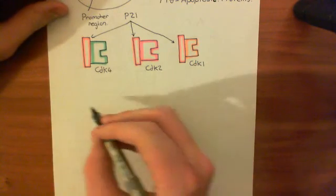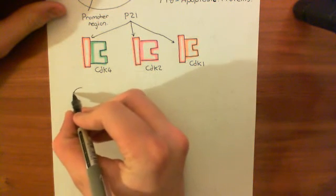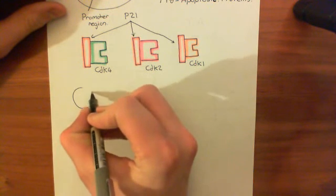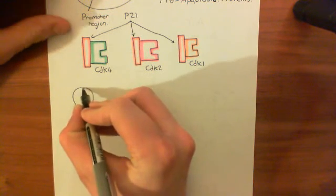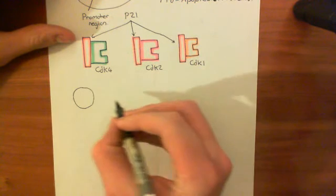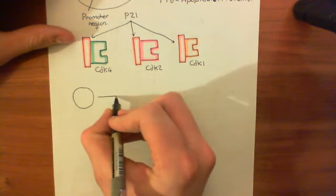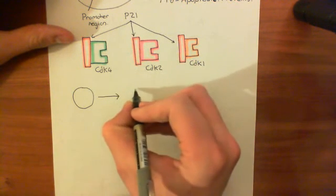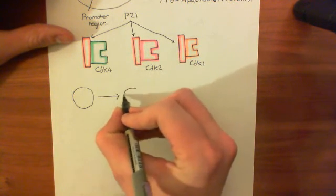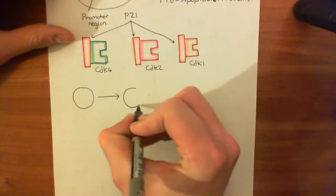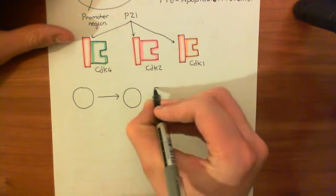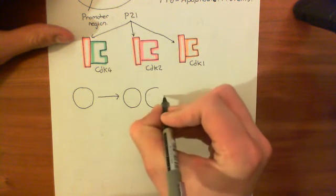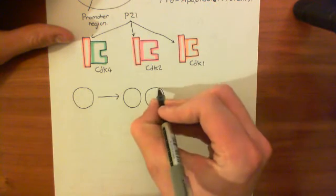The cell cycle is the process by which a single cell can go from being one cell to being two cells — essentially the process of cell division.